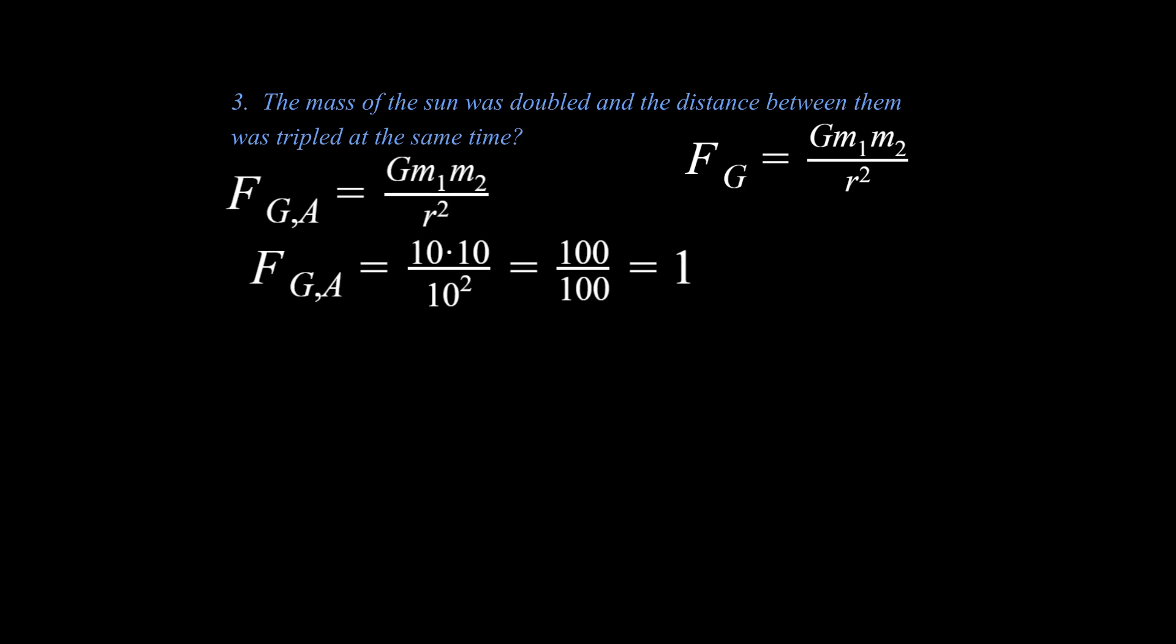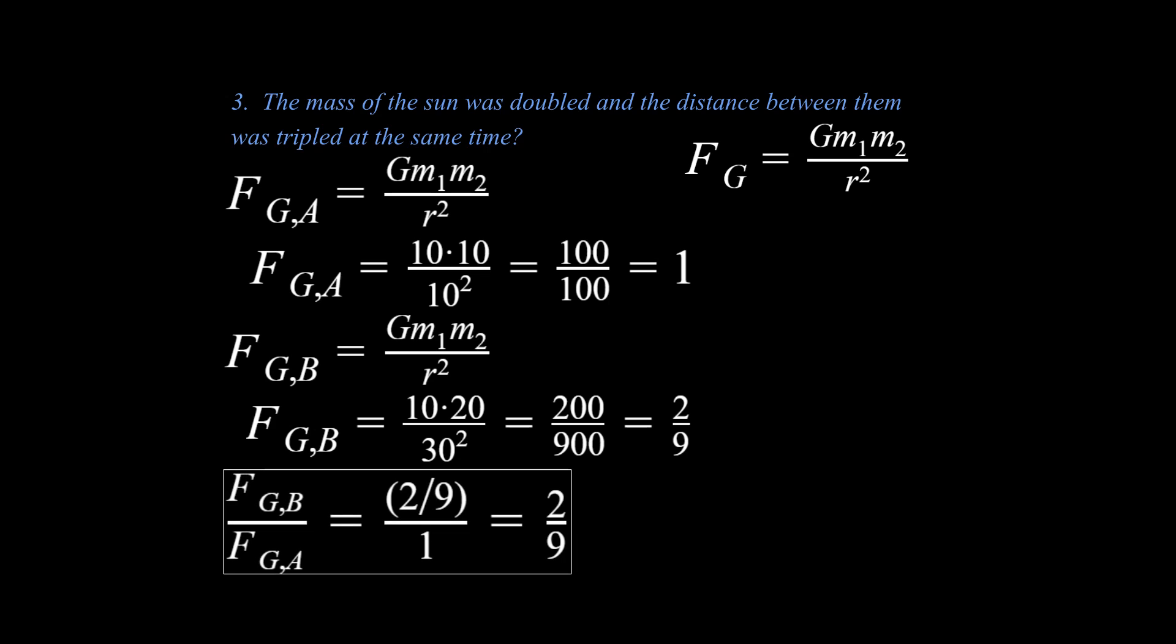The mass of one of the objects is doubled. That means one of the 10s has to be turned into a 20, and the distance between them is tripled, so that denominator 10 needs to be turned into a 30 for an answer of two ninths. So what does that mean? That means our second example with respect to the first example is going to be two ninths as great.